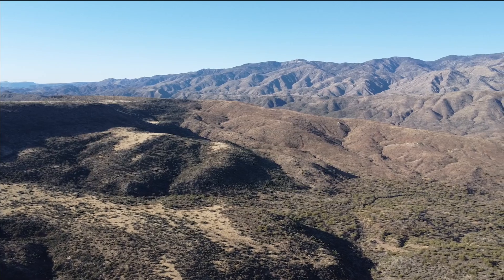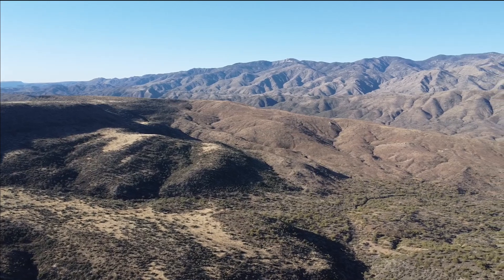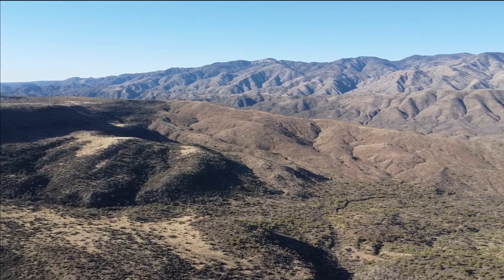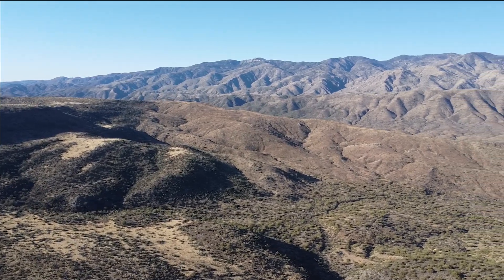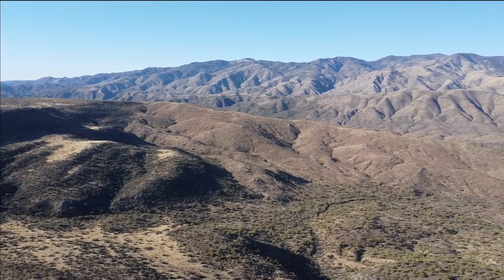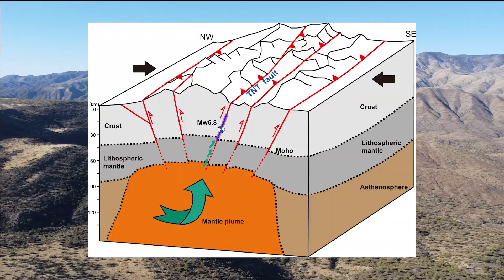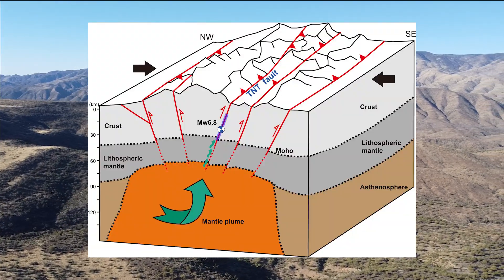Now let's focus on theory number two, which states that the extension in the basin and range is actually caused by hot upwelling mantle rock.